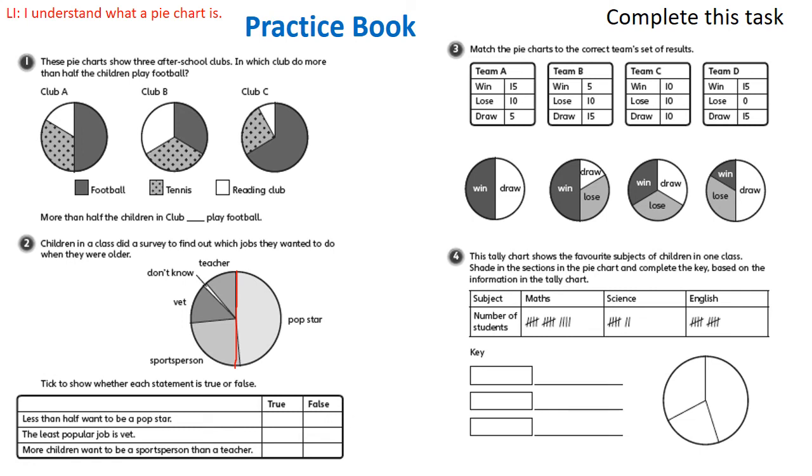Then I've only got team A and team B left. So I'm going to then look at how many each of them won. Well, team A won 15 and team B won 5, so which team won the most? Which pie chart, therefore, has the most wins?